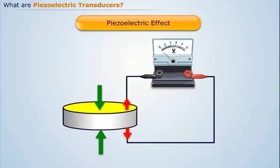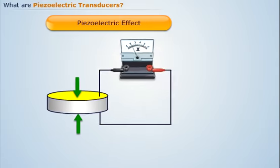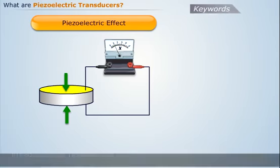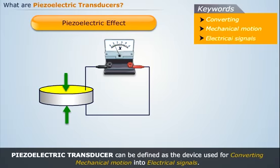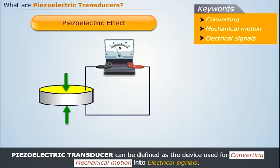Also, if the dimensions of the crystal are changed by application of mechanical force, a potential appears across certain surfaces of the crystal. Thus we can define piezoelectric transducer as the device used for converting mechanical motion into electrical signals.